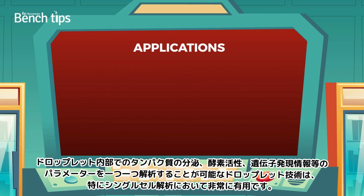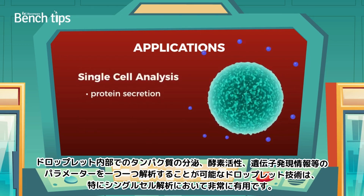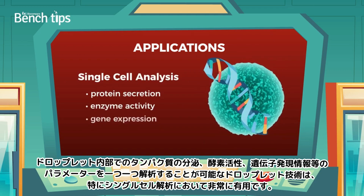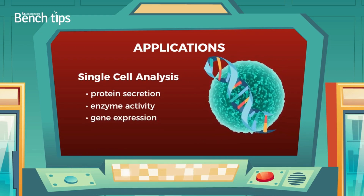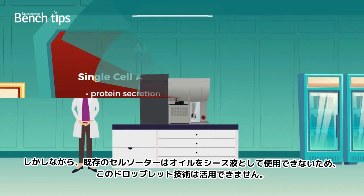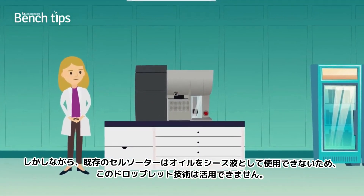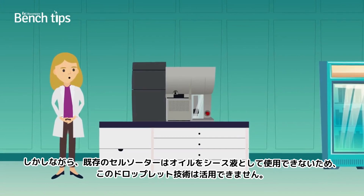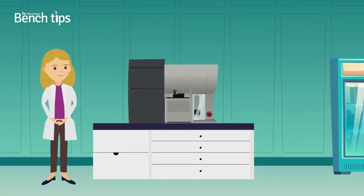It is especially useful for single cell analysis, since it enables parameters such as protein secretion, enzyme activity, and genomic information to be studied on an individual basis. However, applying micro droplet based screening to single cell analysis is technically challenging because conventional cell sorters cannot use oil as the sheath fluid.